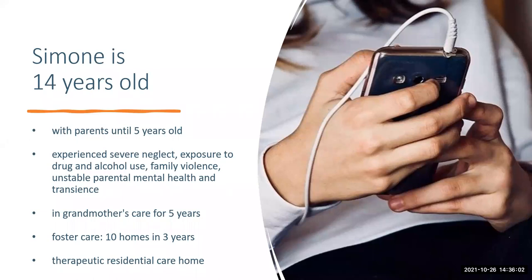Some background on Simone: she initially lived with her parents until age five due to neglect, abuse, family violence, and significant untreated mental illness. She was then moved into her grandmother's care at the age of five, living there with her siblings until roughly age 10. Due to complexities in the grandmother's care, she entered foster care from ages 10 to 13, moving across approximately 10 homes until she was referred to therapeutic residential care at 13.